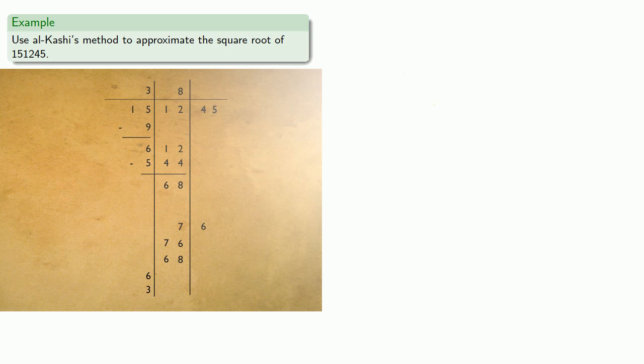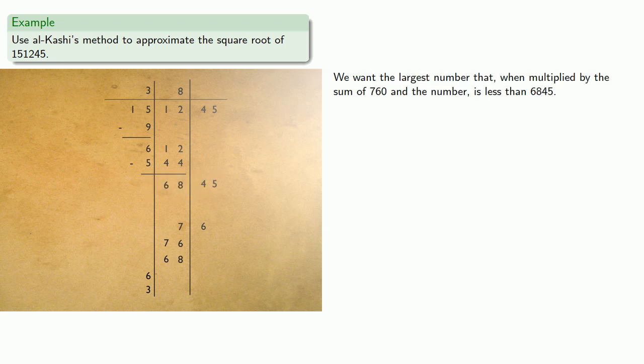Again, this column should be viewed as having two digits, so this number should be 760-something. If we copy down the last few digits, we have 6845. Once again, we want the largest number that when multiplied by the sum of 760 and the number is less than 6845.